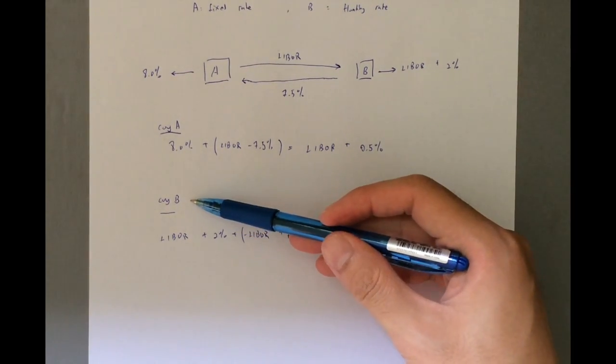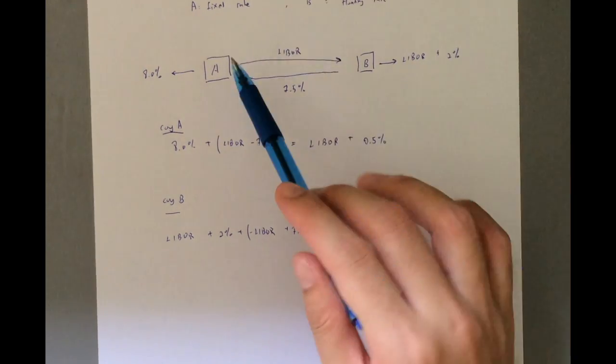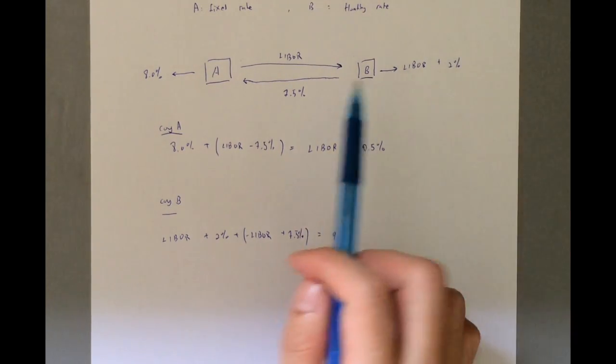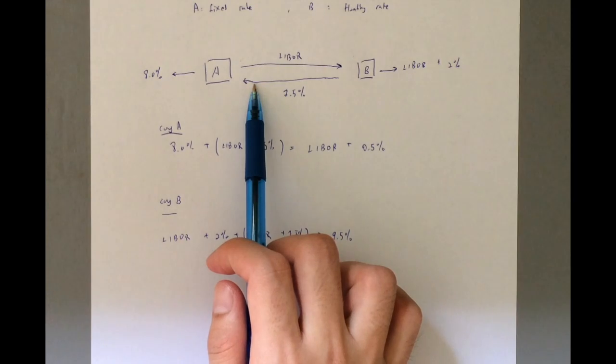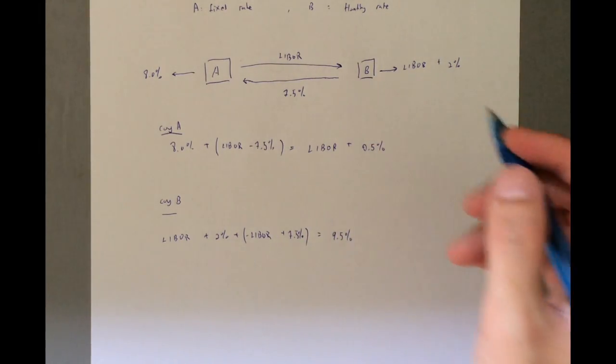And when you see a minus, it means receive. So A receives from B 7.5%. Okay, and you take a look at from the perspective of B, it is minus LIBOR, so it needs to receive LIBOR, and it needs to add 0.75%, which is paying 7.5%.